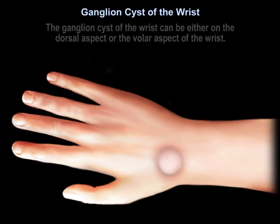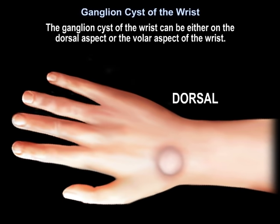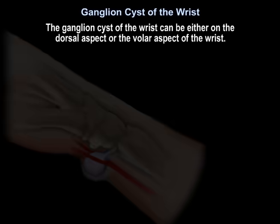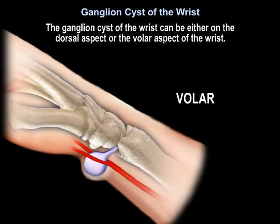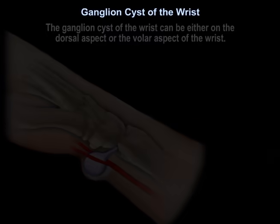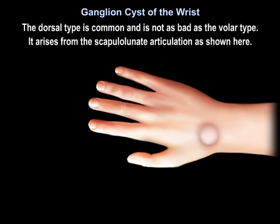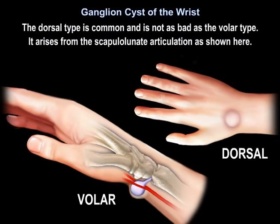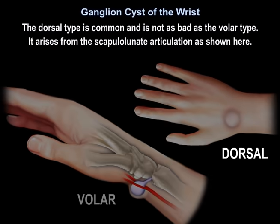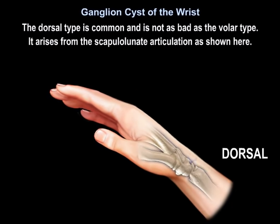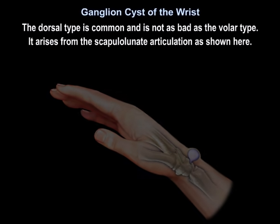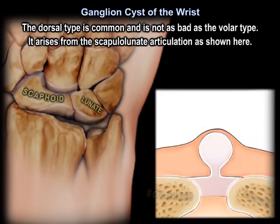The ganglion cyst of the wrist can be either on the dorsal aspect or the volar aspect of the wrist. The dorsal type is more common and is not as problematic as the volar one. It arises from the scapholunate articulation, as shown in this diagram.